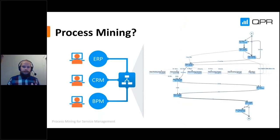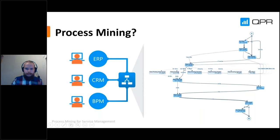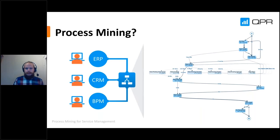But when you look at the actual data, it is not that simple. In reality, the process can look something like this — you have certain deviations, a lot of different paths the service can take, you're skipping steps, coming back to previous steps, and it's really hard to say what the real process is. You have certain bottlenecks and a lot of variation.